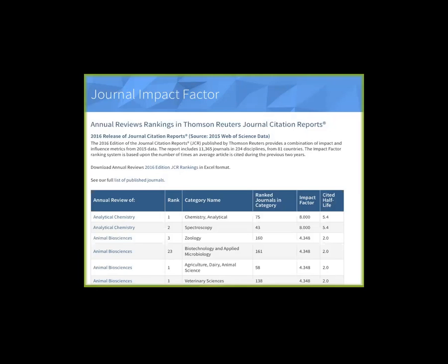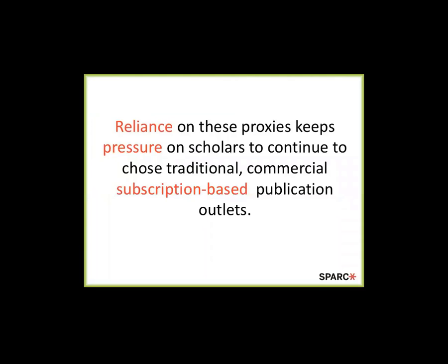Impact factors evolved as a way to supplement very inexact library shelving statistics — where we'd look at the carts at the end of the day and count how many times we put a journal back on the shelf — with a slightly less inexact but by no means perfect measure. And yet we've adopted it and used it as if it's telling us something gold-standard. Reliance on these proxies really keeps pressure on scholars to continue choosing traditional commercial subscription-based outlets.